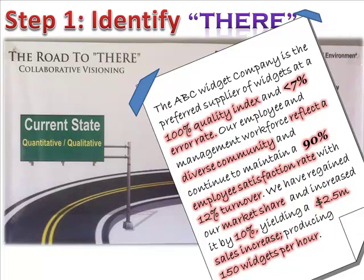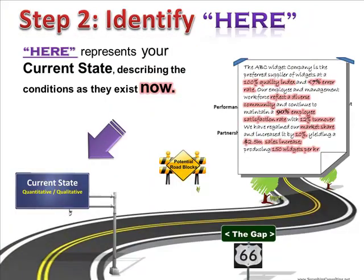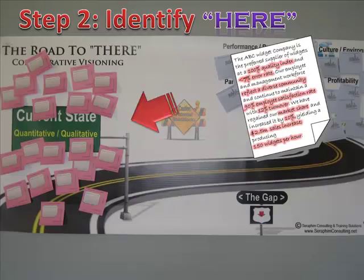In step 2, you'll compare the 'here,' or the current state, to your vision of 'there,' your desired state. You'll do this by describing both your quantitative and qualitative conditions. Again, you'll use the same brainstorming process — use the sticky note activity pieces to brainstorm, and remember everyone's input counts.